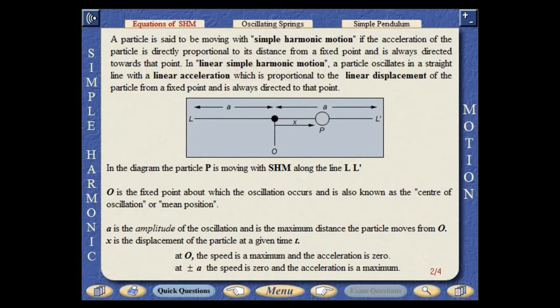At O, the speed is a maximum and the acceleration is zero. At distance A from point O, the speed is zero and the acceleration is a maximum.